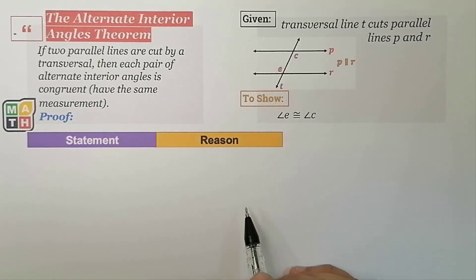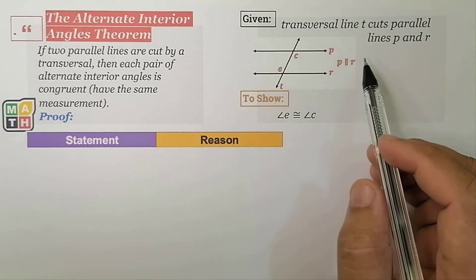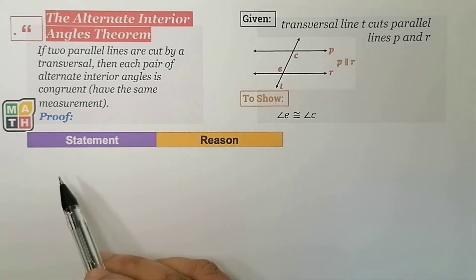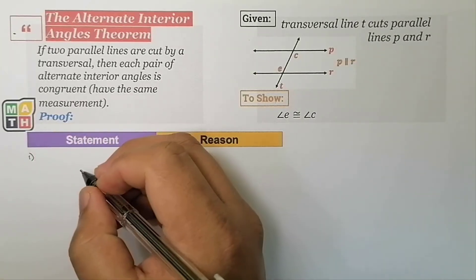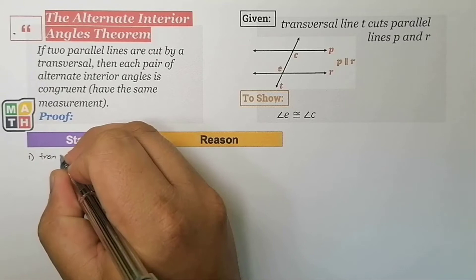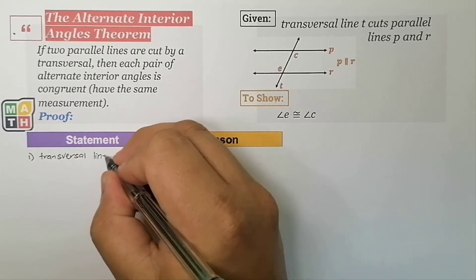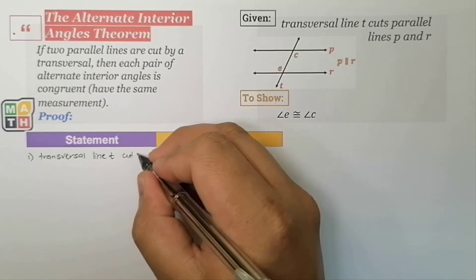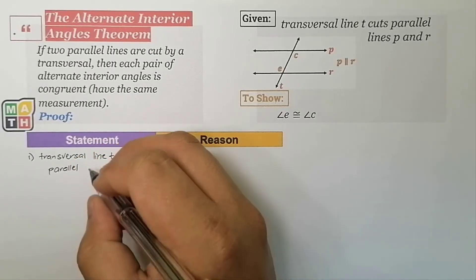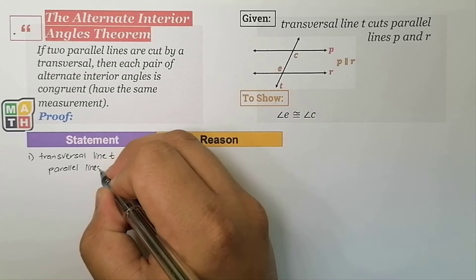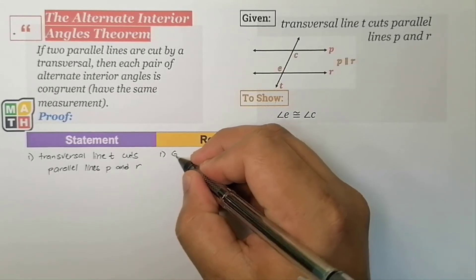For the first statement of our two-column proof, we need to consider the given statement, so that subsequent statements will be anchored to this claim. Our first statement is that transversal line T cuts, or intersects, parallel lines P and R. The reason: given.